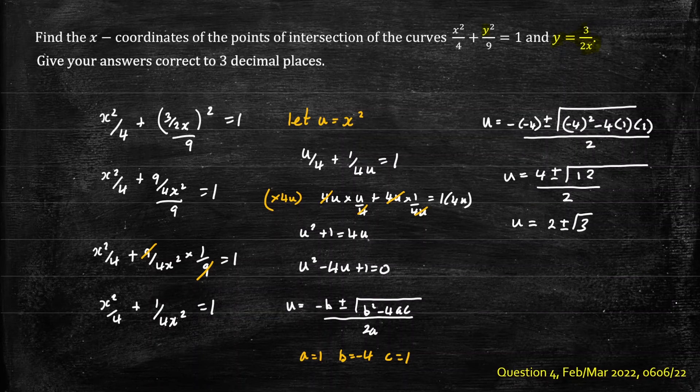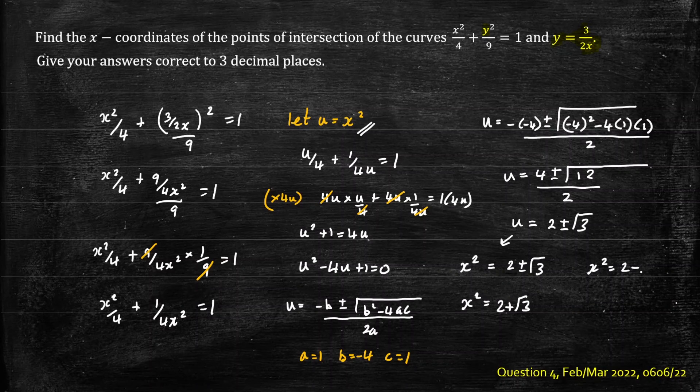If we go back to our original substitution u equals x squared that means we can replace u with x squared. So we have x squared equals 2 plus or minus root 3. This will give us x squared equals 2 plus root 3 and x squared equals 2 minus root 3.